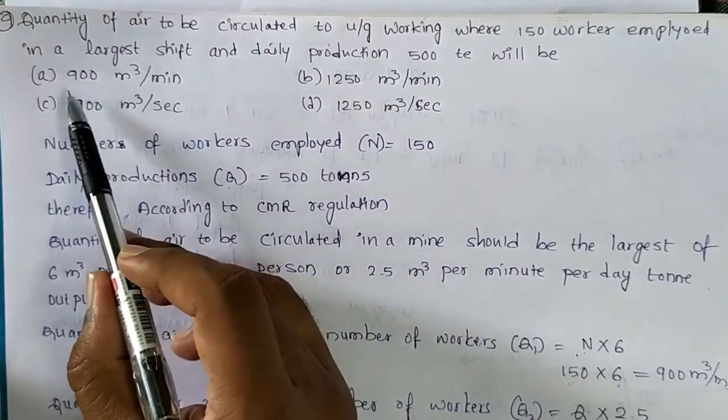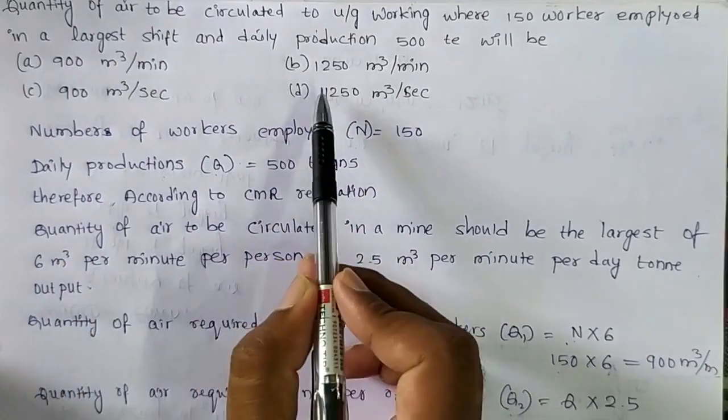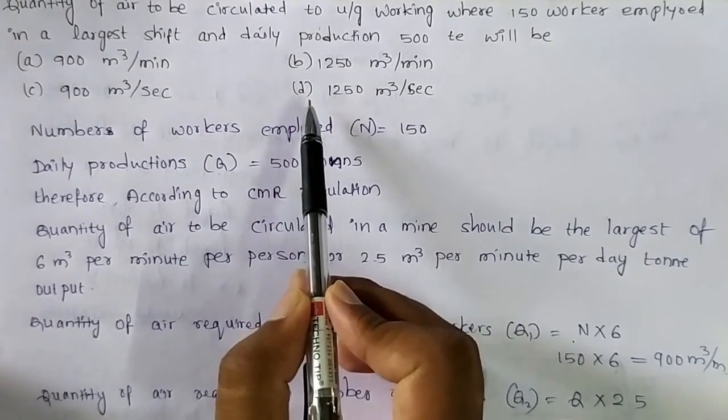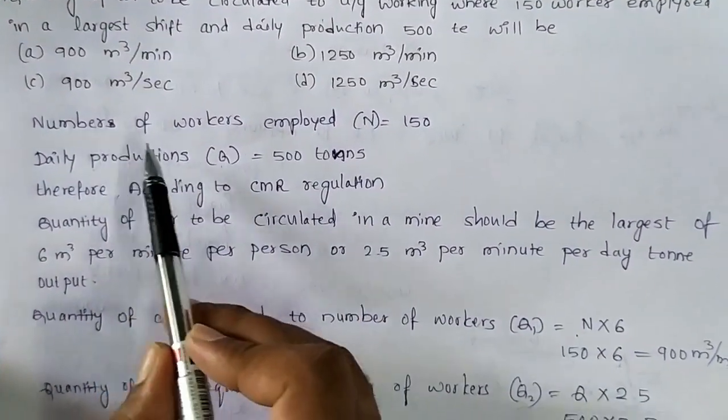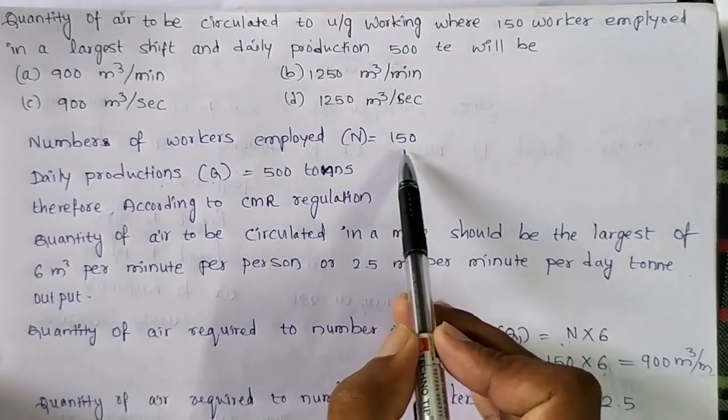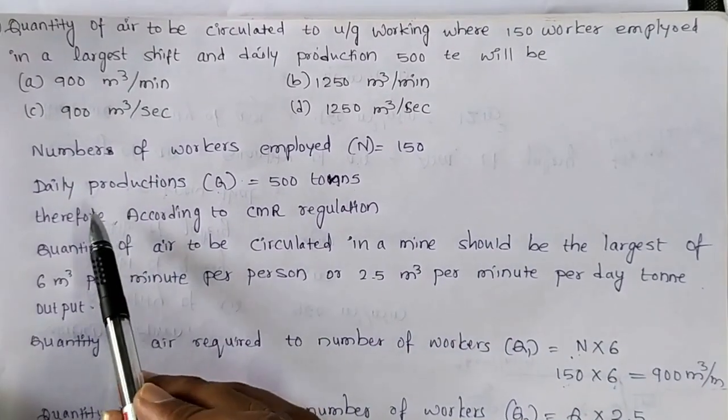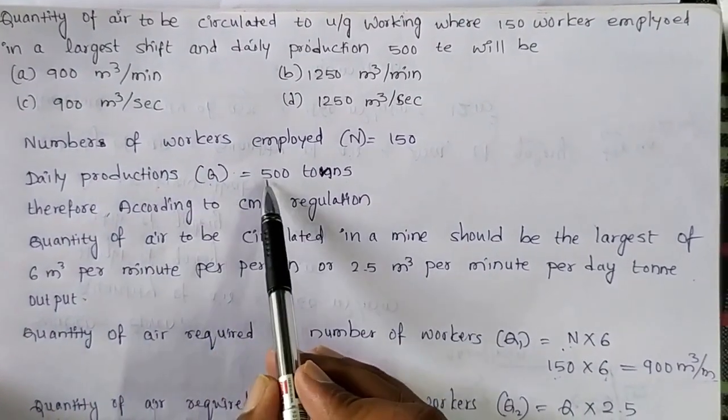So here the options are given in question A, B, C, D. We will see after completion of this problem. Number of workers employed N is 150. So here the total number of workers is 150 members and daily production could be 500 tons.